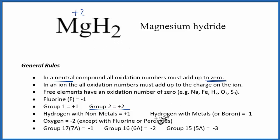Since magnesium is a metal, hydrogen, when it's bonded to metals, has a minus 1 oxidation number.